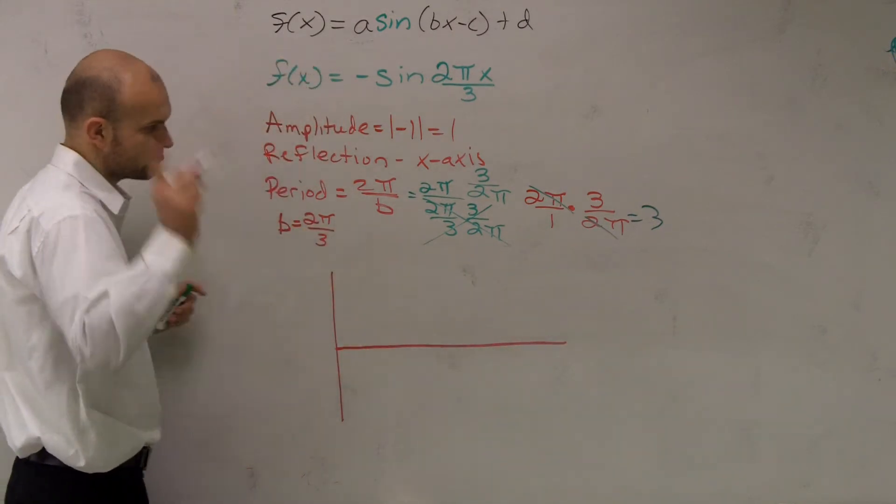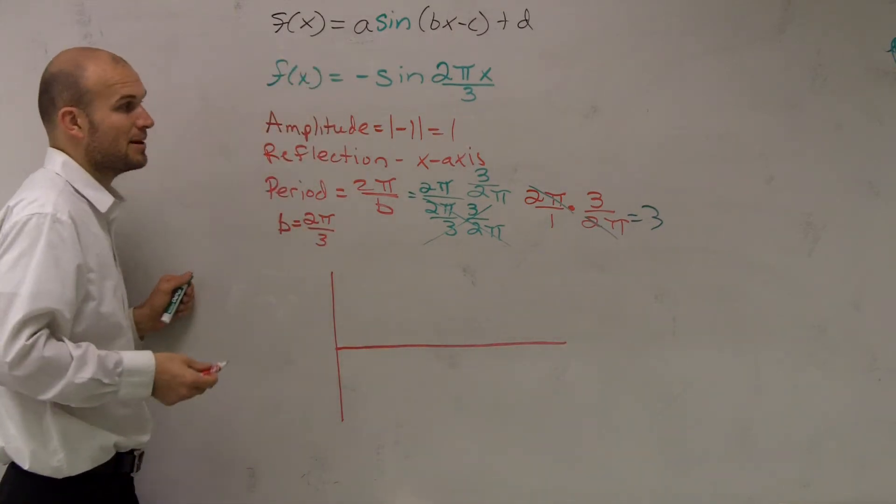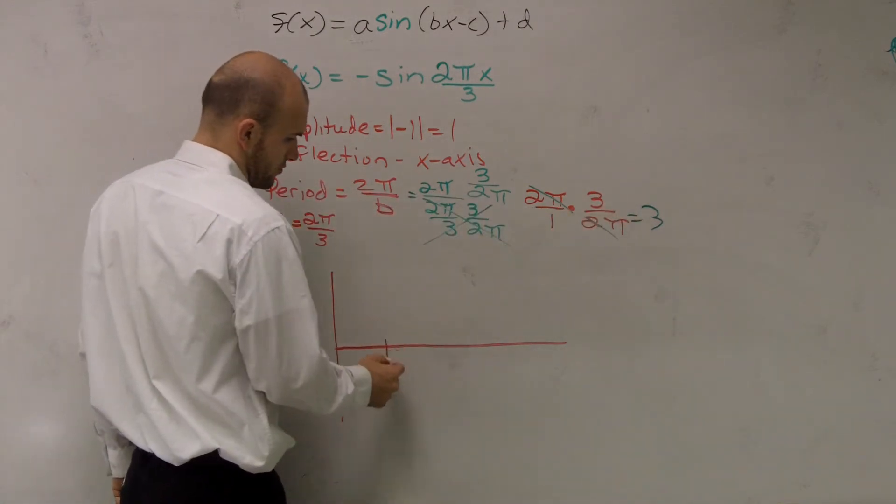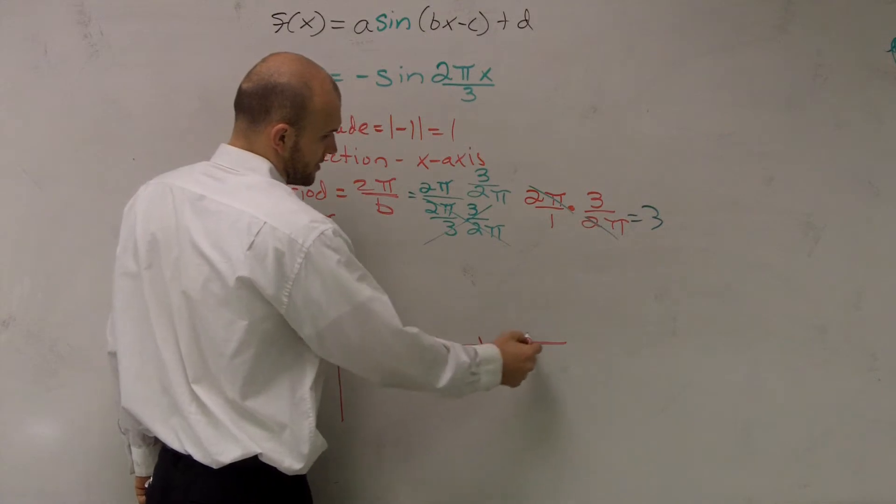Got the reflection. I'm going to do the reflection right off the bat. So we know our period is 3, right? So let's go out to 3. 1, 2, 3, 4.